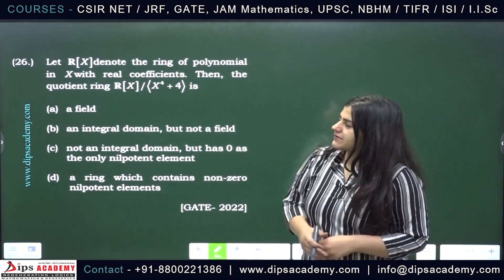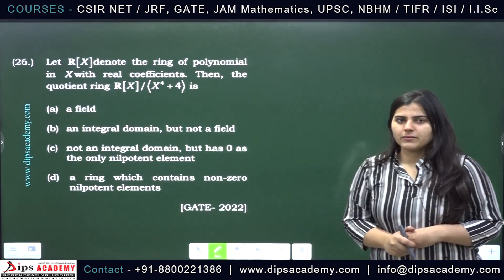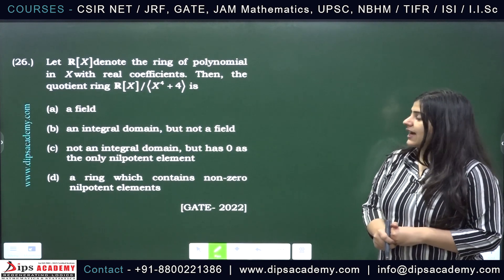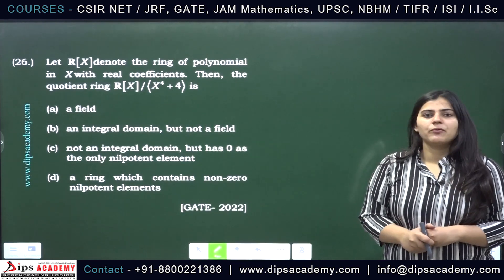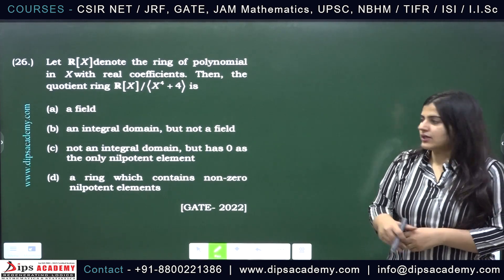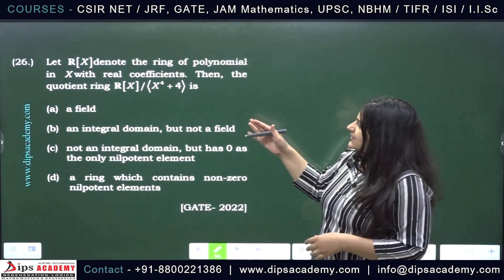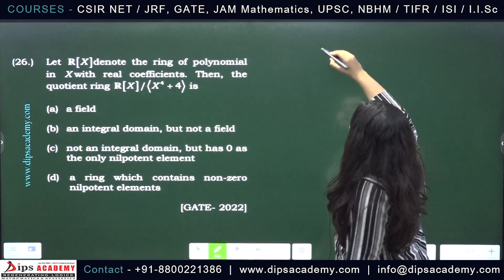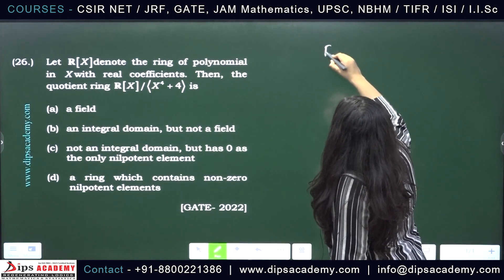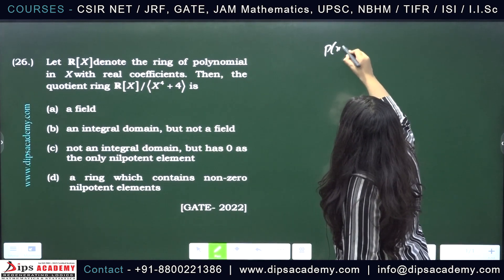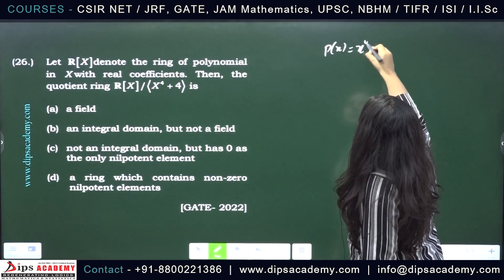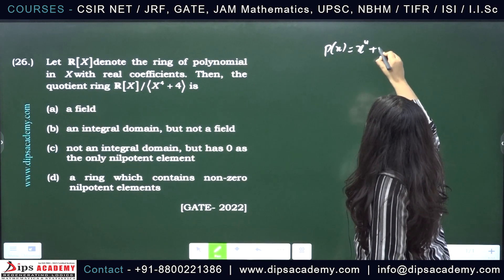In this question, we have given a ring of polynomials with real coefficients and an ideal generated by a polynomial of degree 4, that is x raised to the power 4 plus 4. So if p(x) is our polynomial, x⁴ + 4.